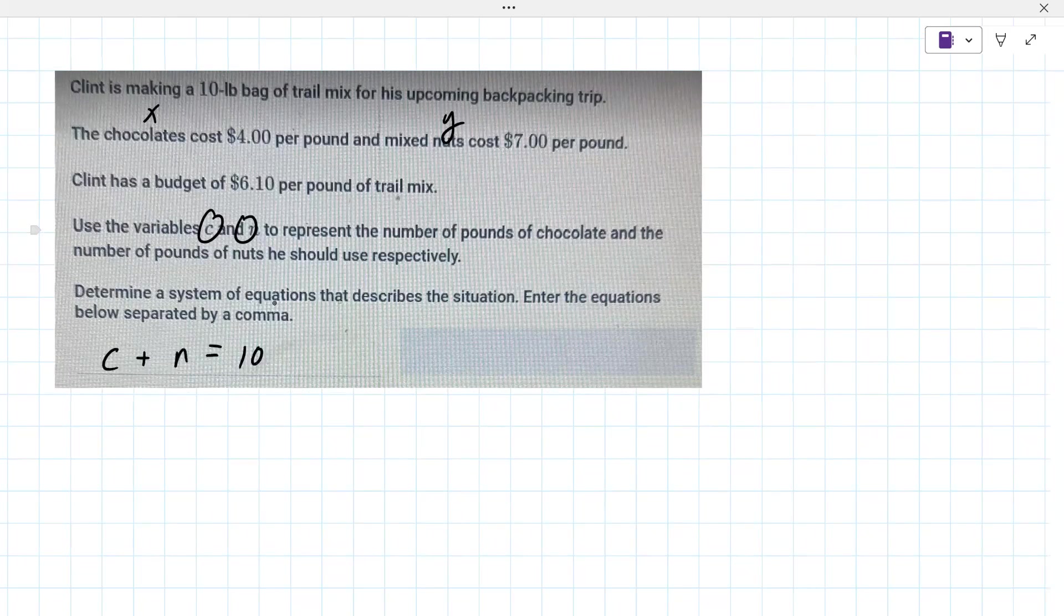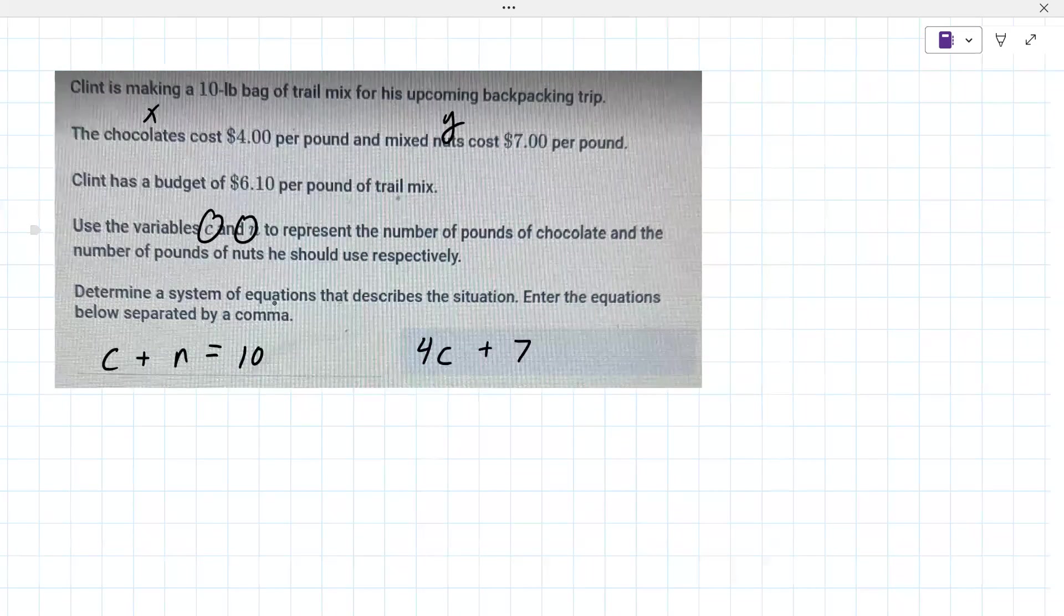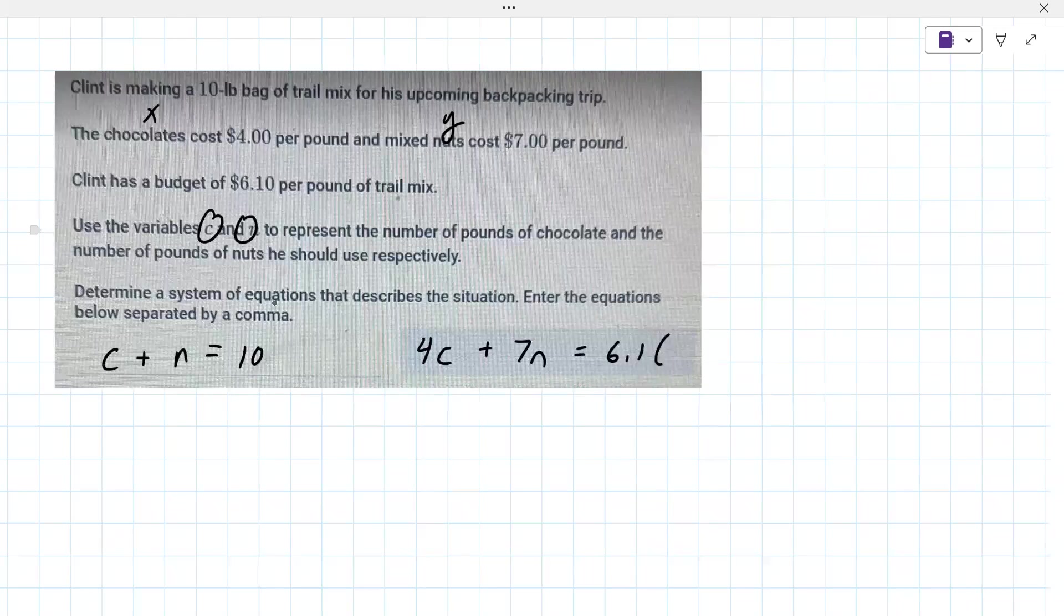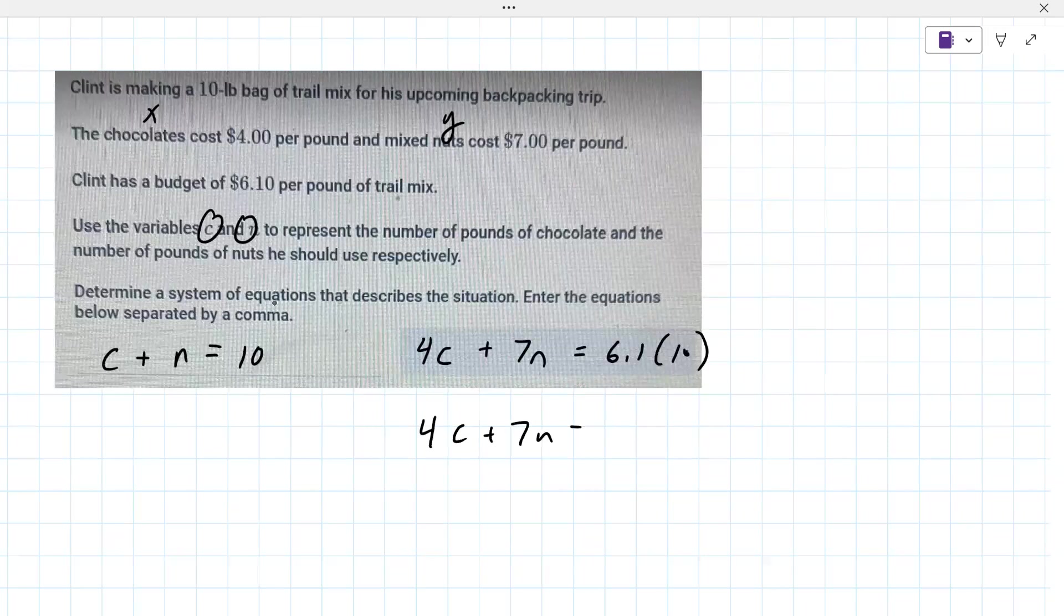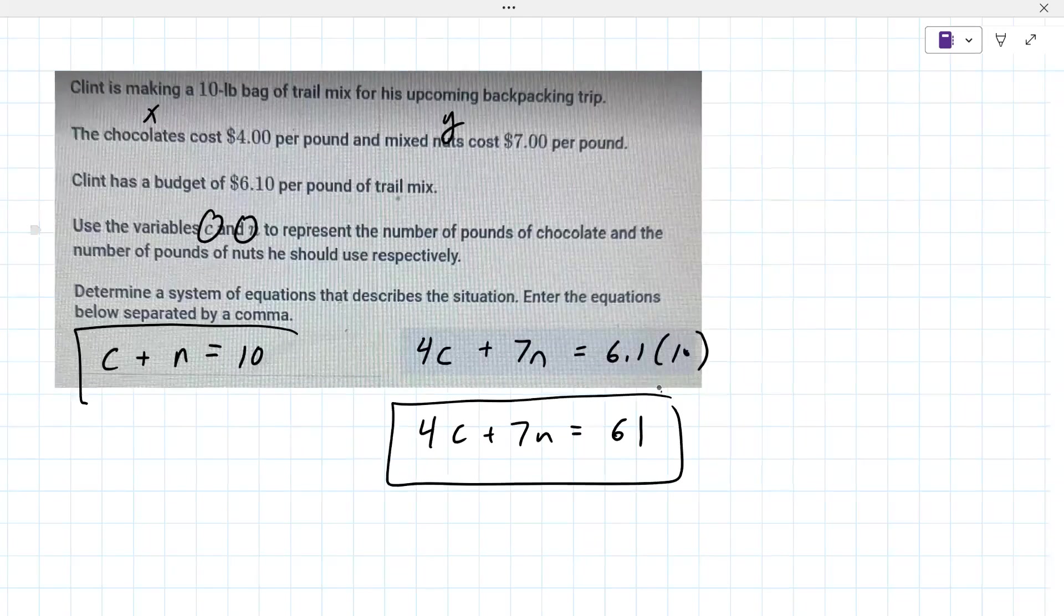n equals 10, that's the 10 pound bag of chocolate. Second equation is 4c plus 7n equals 6.1 times 10, which is 61.